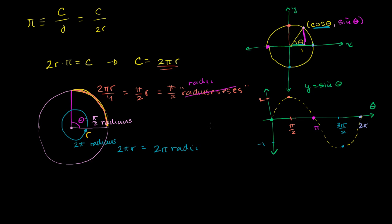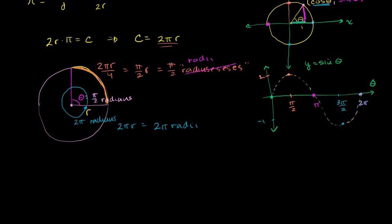I'm reminding you of all of these things because we're going to revisit them with a different number other than pi. But first, one last visit with pi: Euler's formula states that e to the iθ equals cosine of theta plus i times sine of theta. This by itself is one of those mind-boggling formulas.